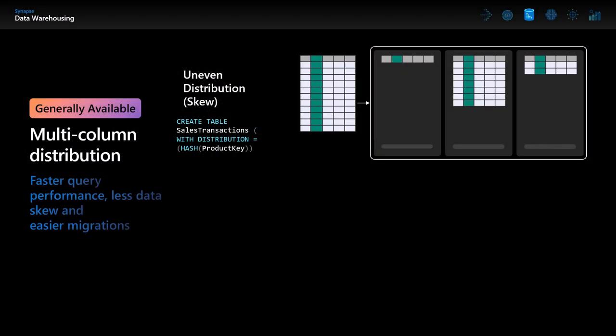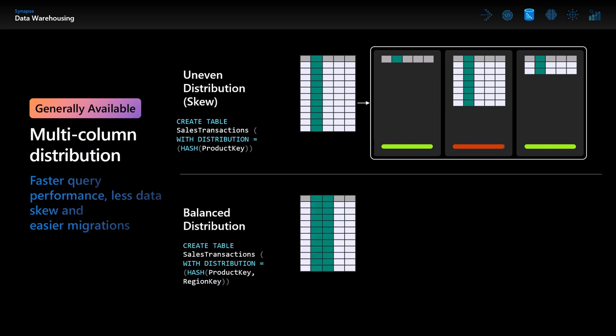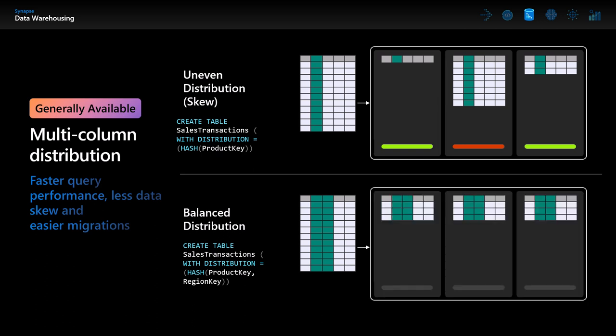Next, let's take a look at the general availability for multi-column distribution. When table size grows larger and query complexity increases, queries start to run slower due to heavy data skew or data movements. This March, we're excited to announce the release of multi-column distributions. It delivers a more even distribution of table data, reduces data skew, and can improve query performance. Adding this support to Synapse will also simplify customers' migration from other platforms that allow multi-column distributed tables. Consider this example where a table is distributed on product key — the choice of distribution column is causing data skew and slow queries. By using the multi-column distribution feature, when a table is distributed on product key and region key, the data distribution is more balanced and queries run faster.